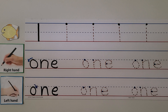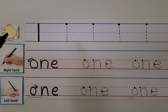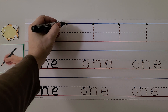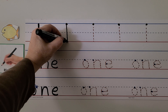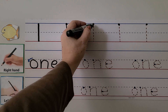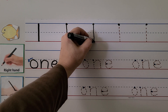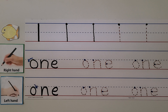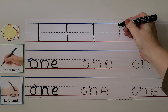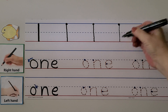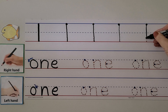We can write the number starting at the dot on the top. Here's the number one — we have one fish. We start at the top and come straight down to the line. Let's try it for right-handed students: start at the top and come straight down to the line.